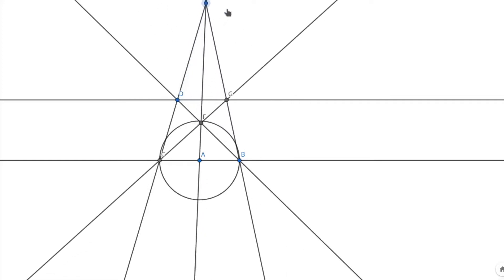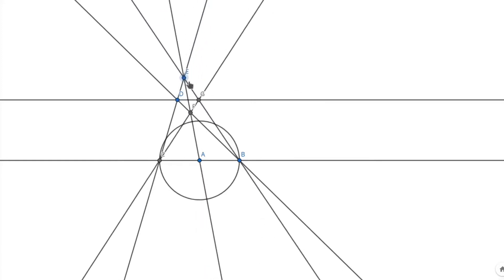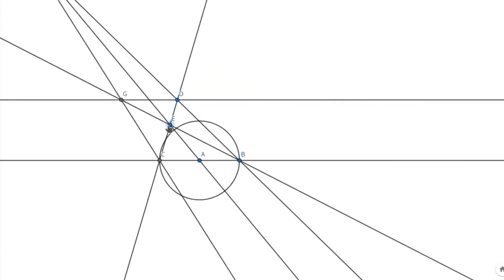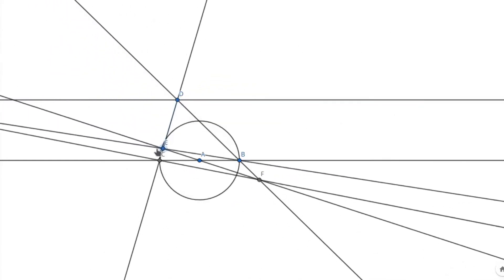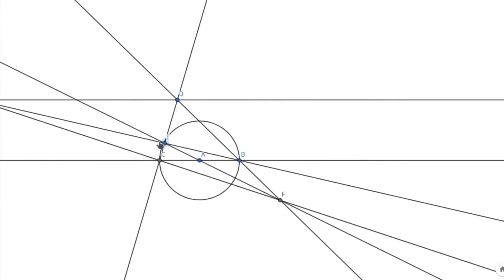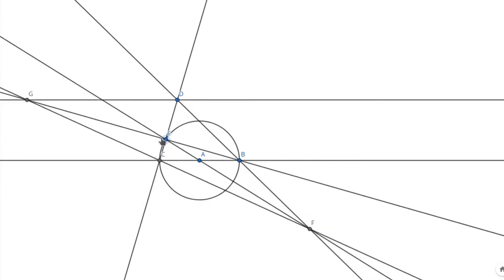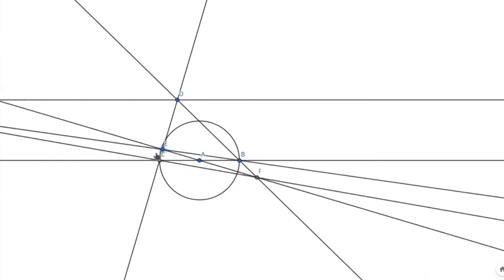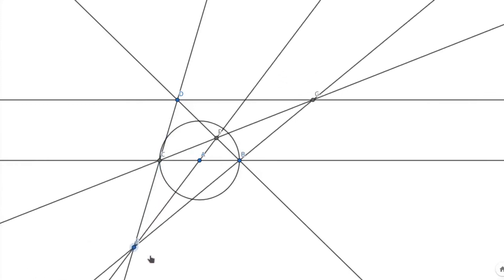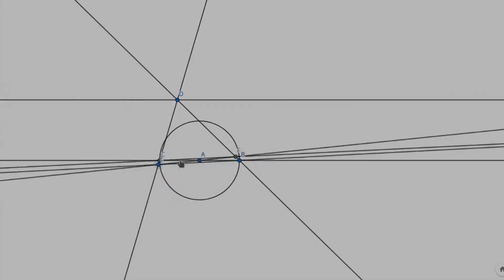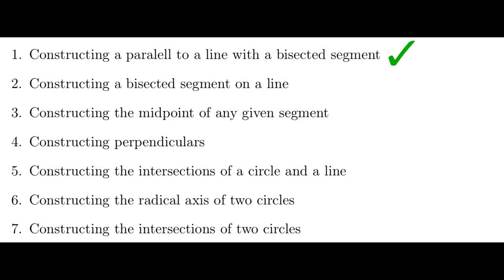The proof of this ends up being a simple argument of similarity of triangles — I will leave that as an exercise to the viewer. You might ask: what if the line I want to construct a parallel to doesn't pass through the center of the given circle? Let's see how we can construct a bisected segment on a line which does not pass through the center of the circle.